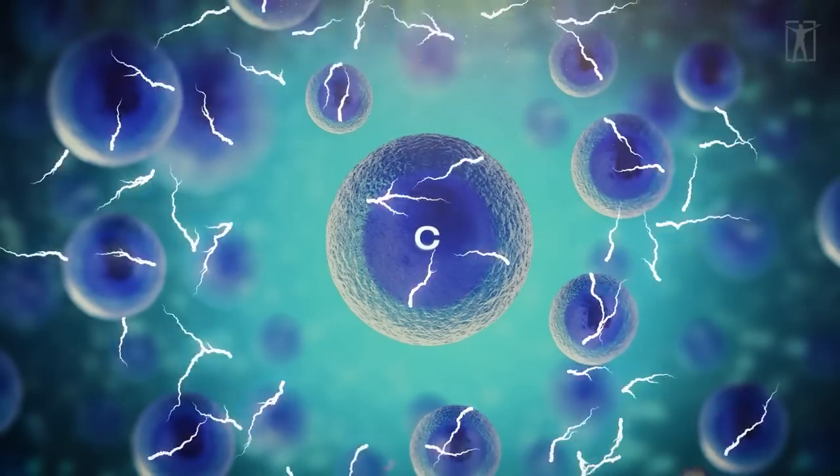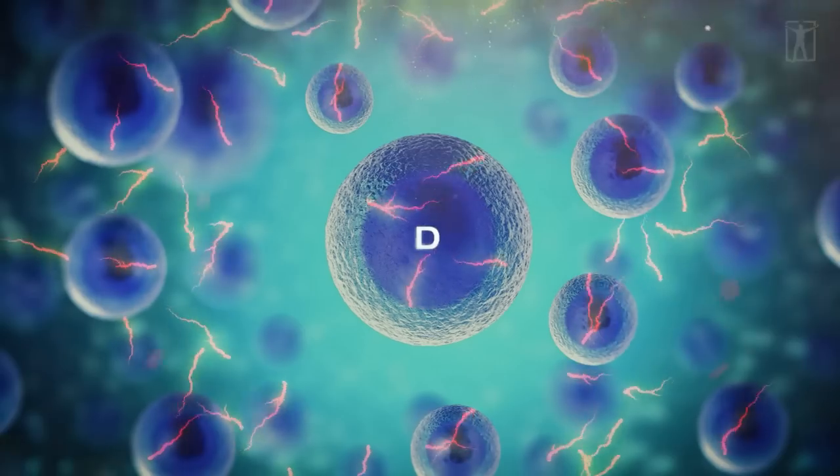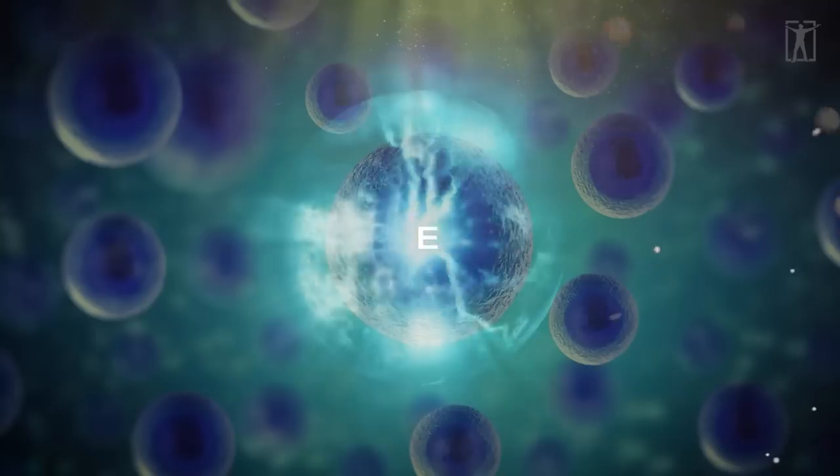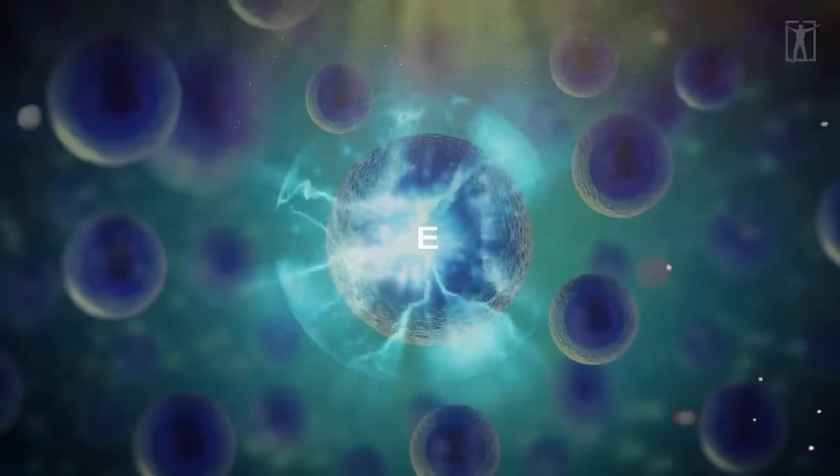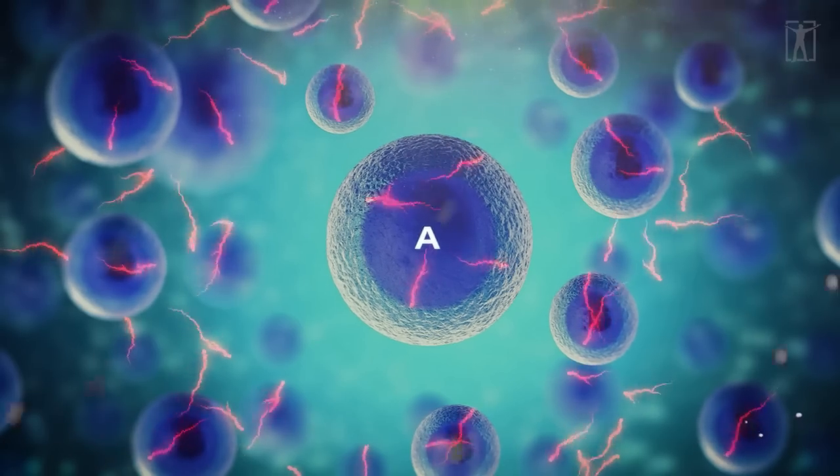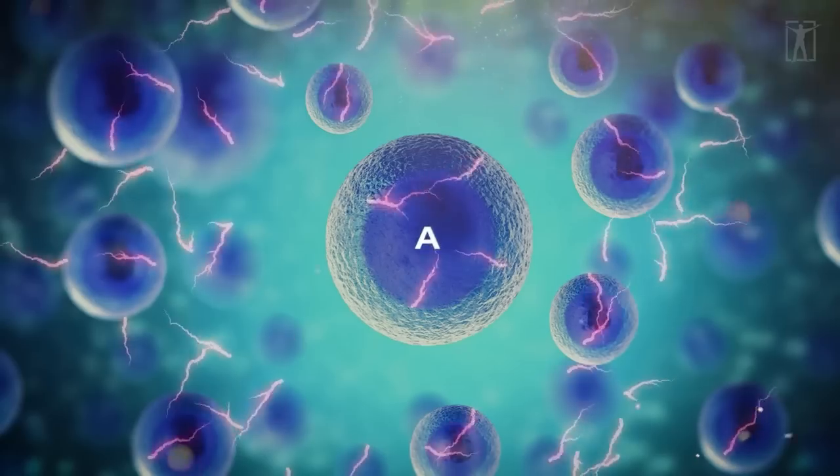He discovered that the note C lengthened the energy field around the cells, D produced a variety of colors, E made the field spherical, and A 440 Hz changed the color from red to pink.